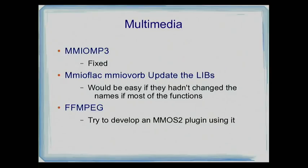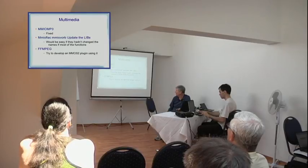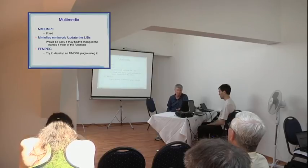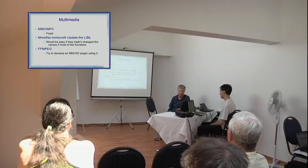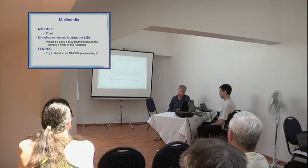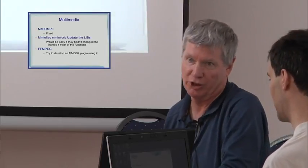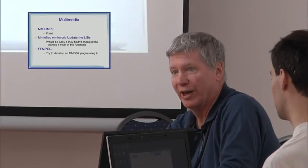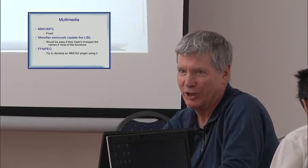For Flac and Vorbis, I want to update the libs, but the libs have been changed and the Unix developers changed all the function names - as far as I can tell they think backward compatibility is irrelevant. So now I have to go back and figure out what the new function names are and redo all the function calls. I had hoped to just put the lib in and recompile, not get a bunch of name errors.